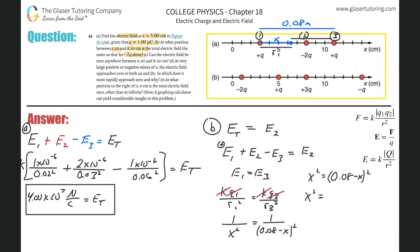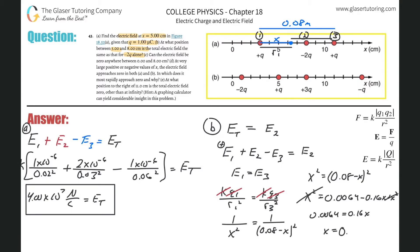Expanding the right side: 0.0064 minus 0.16x plus x². The x² terms cancel, leaving 0 = 0.0064 − 0.16x. Solving: x = 0.0064/0.16 = 0.04 meters, which is four centimeters. So the point of interest is four centimeters from charge one.